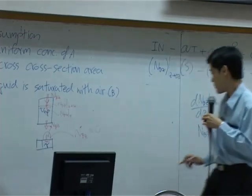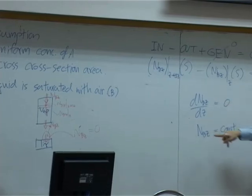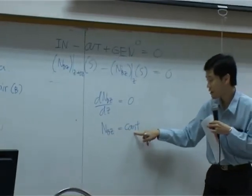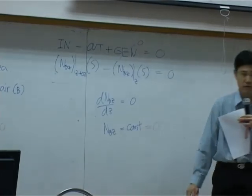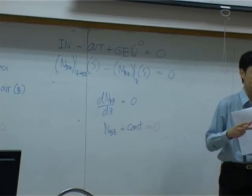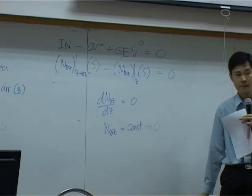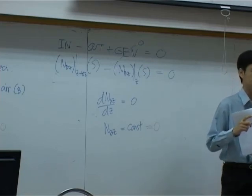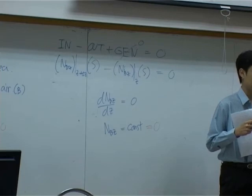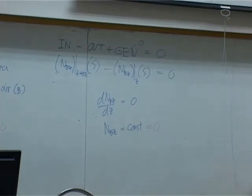So if it is zero, now consider vapor side. Flux in vapor side is constant, equal to zero. That means it is zero everywhere. So if it is zero everywhere, then I can drop this term.